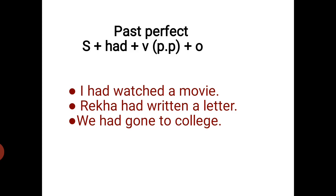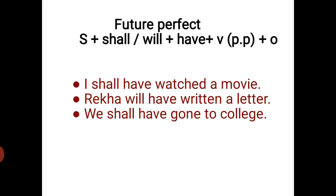Second sentence: 'Rekha has written a letter'. Third sentence: 'We have gone to college' becomes 'We had gone to college'. So if you have a present perfect tense sentence and you need to convert it to past perfect, you only need to replace 'have' or 'has' with 'had'. Okay, these are the hints for past perfect tense.